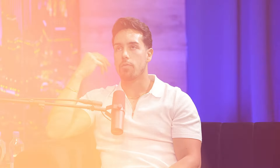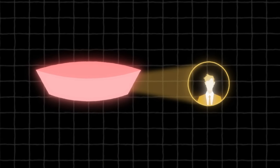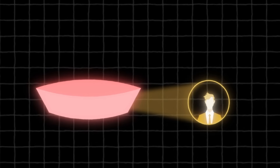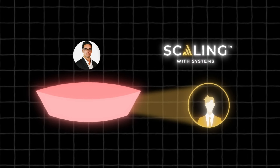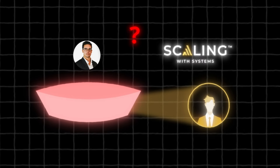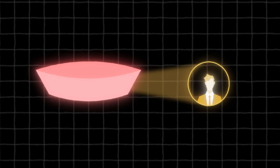So what do you mean by bottom of the funnel with the setters? Bottom of funnel — for us, top of funnel is ice cold. They never heard of us, and we're pretty much bringing awareness. If we get a lead from them, that's great, like a name and a phone number. But even if we just get somebody who didn't know who Ravi Waller or Scaling With Systems was previously, and now they know who we are, we would consider that top of funnel.